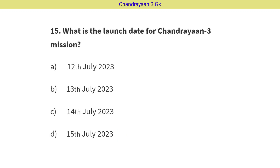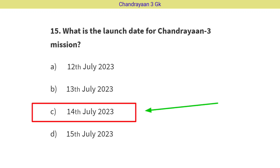Question No. 15: What is the launch date of the Chandrayaan-3 mission? The correct answer is Option C, i.e. 14th July 2023.